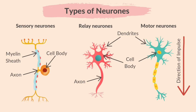You are expected to identify in diagrams and images sensory, relay and motor neurons. Sensory neurons are long and have a cell body in the middle of the axon. Relay neurons are short and have a small cell body at one end with many dendrites branching off it. And motor neurons are long with a large cell body on one end and long dendrites branching off it.